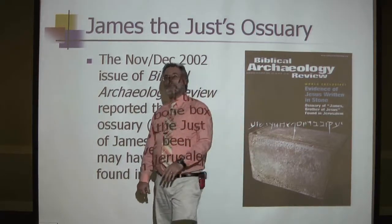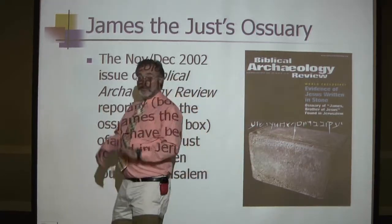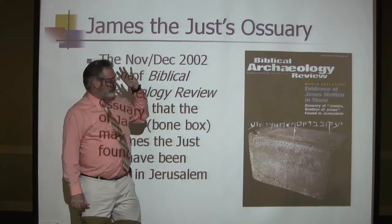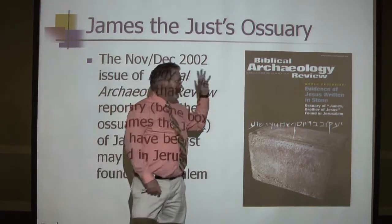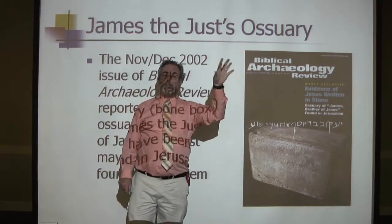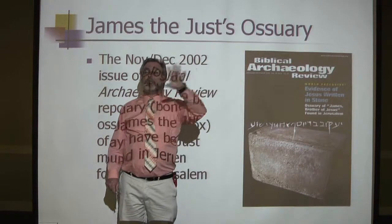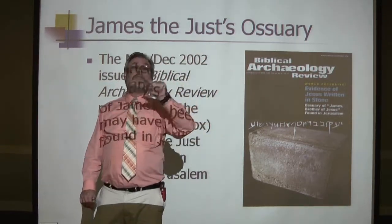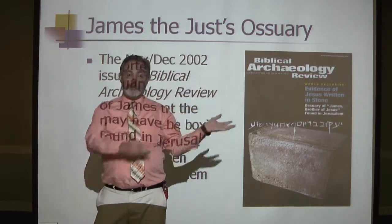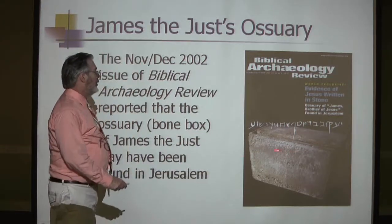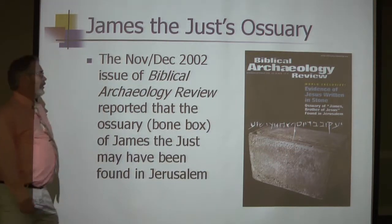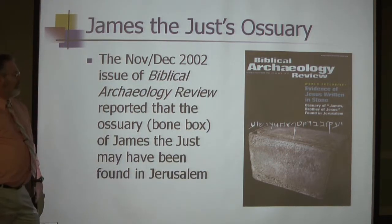The first part of the inscription is a standard 'James Bar Joseph' — James Son of Joseph — to identify who the person is that was in the bone box. But there's another part of the inscription, and that is where we get into the controversy.